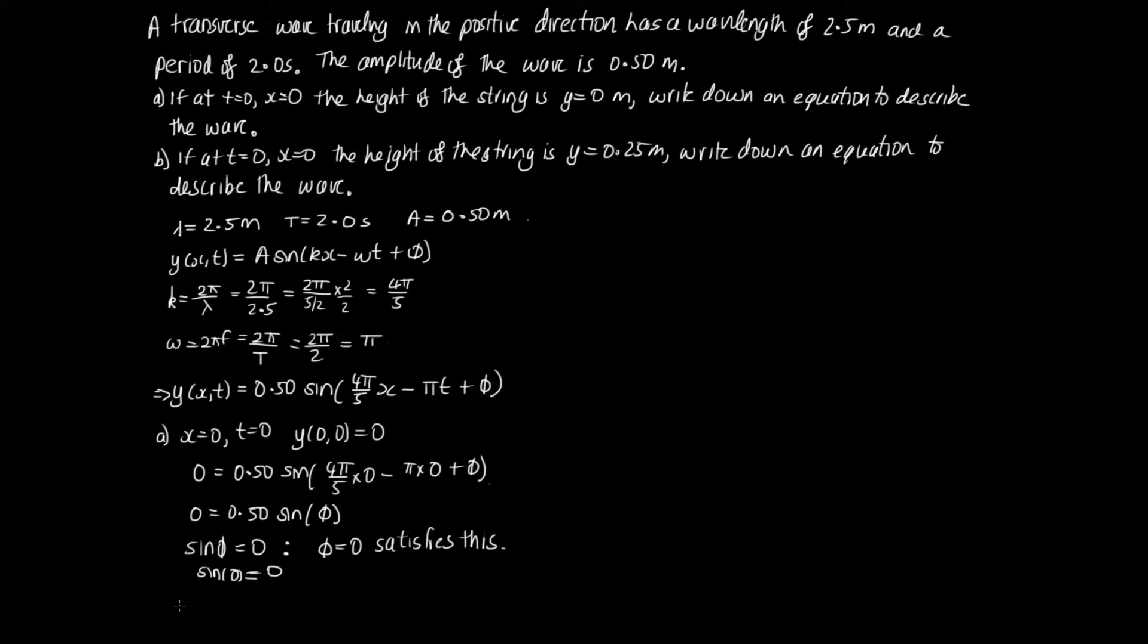And so we can see that sin phi equals 0 and so phi is equal to 0 satisfies this as we know that sin of 0 is equal to 0. You can check that on your calculator. And so our equation in this case is y of x and t is equal to 0.50 sin 4 pi on 5 x minus pi t. So that's our equation for part A.